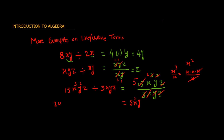Next example: 20xy minus 10yx. This is a subtraction operation, so we check for like terms first. Is xy a like term to yx? Yes — because the order of the letters doesn't matter. So these can be simplified: 20 minus 10 is 10, and the variable part is xy (or yx — both are correct). The answer is 10xy.